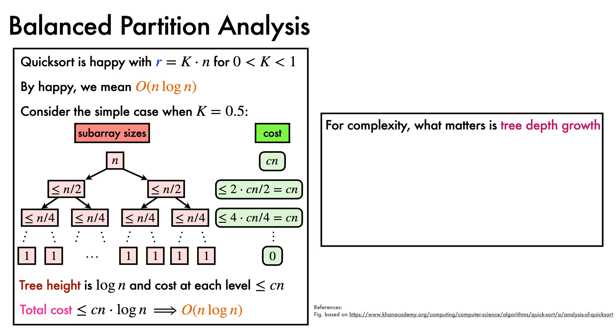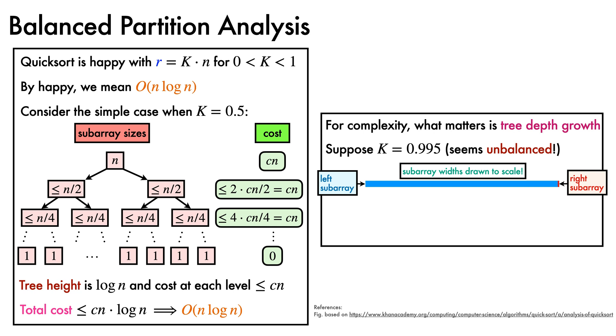Note that for complexity, what matters is the recursion tree depth. Suppose we have a ludicrously unbalanced partition, in which the rank is k times n, and k is 0.995. This produces subarray splits that look like this, which is drawn to scale, where we can see the left subarray occupies most of the width, and you may just be able to make out the right subarray. Clearly, this looks unbalanced. However, our recursion tree depth is log base 1000 over 995 of n.